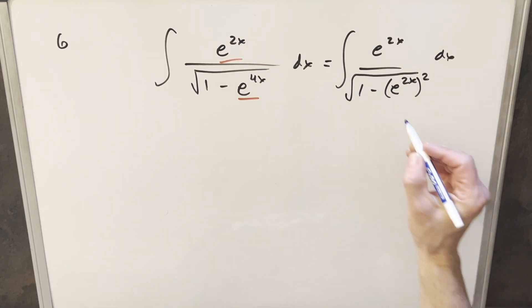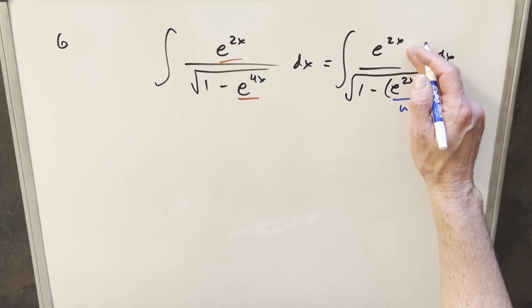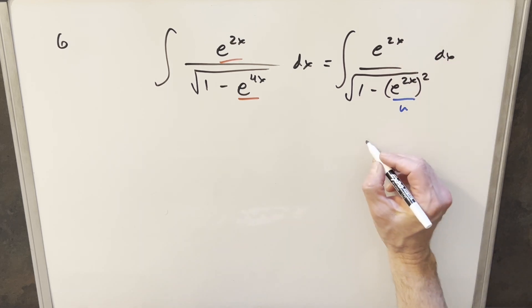But doing it this way, if I make my u substitution for e to the 2x, if this is our u value and we differentiate, we know we're going to get an e to the 2x. So this should work out pretty nice. So I'll go ahead with that.